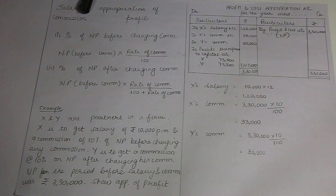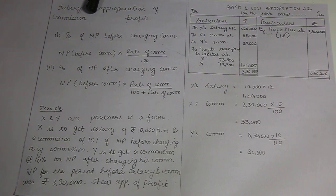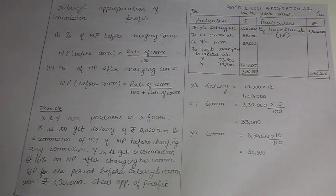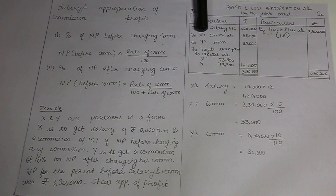Commission can be given as a percentage of net profit. For example, if a specific amount like Rs. 20,000 or Rs. 30,000 is given directly, then that amount will directly go to your profit and loss appropriation account.